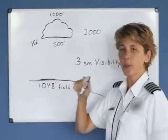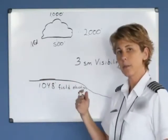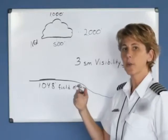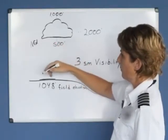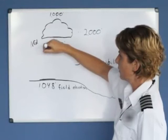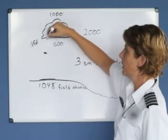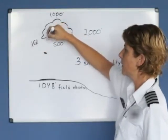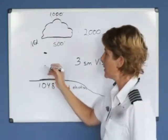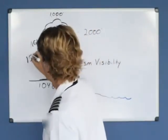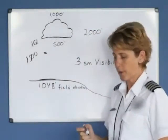If we're doing a traffic pattern, we typically fly between 800 or 1,000 feet above the ground. So if we flew our traffic pattern at 1,000 feet above the ground, for example, and we had to stay 500 feet below the clouds, then we need the reported ceiling to be at least 1,500 feet to remain VFR.